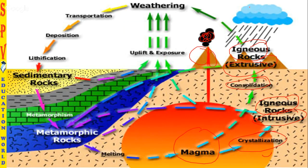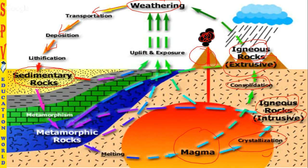Over time, igneous rocks face environmental and atmospheric changes — rain, weathering, air pressure, and more. Slowly, weathering occurs, and material is transported and deposited elsewhere. Then lithification happens: high pressure mounts as material accumulates layer over layer, slowly forming sedimentary rocks. These sedimentary rocks move deeper into the earth, where rising pressure and temperature cause metamorphism, forming metamorphic rocks. Due to very high temperature, metamorphic rocks melt back into magma, completing the rock cycle.